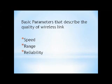There are three basic parameters that completely describe the quality and usefulness of any wireless link: speed, range, and reliability. Prior to the development of MIMO technology, these three parameters were interrelated according to strict rules. Speed could be increased only by sacrificing range and reliability. Range could be extended at the expense of speed and reliability, and reliability could be improved only by reducing speed and range.